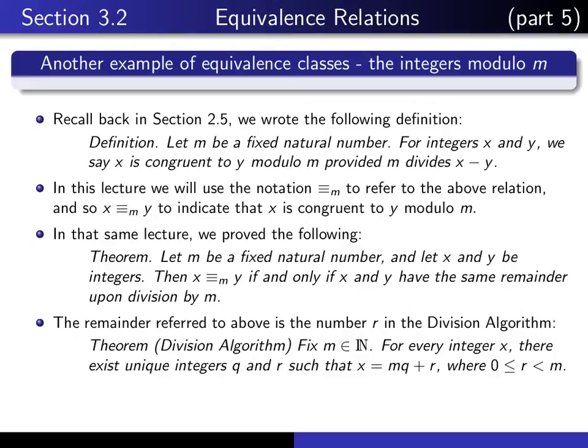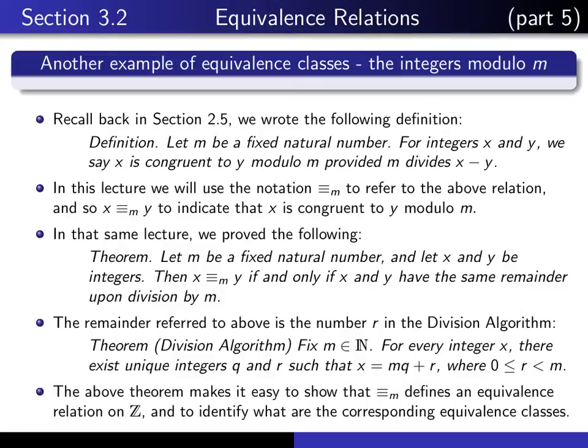What the theorem says is that if you look at x and y separately, they're going to be congruent modulo m precisely if the remainder r comes out the same when we divide x by m and y by m separately. That result is going to make it very easy for us to show that this relation is actually an equivalence relation.